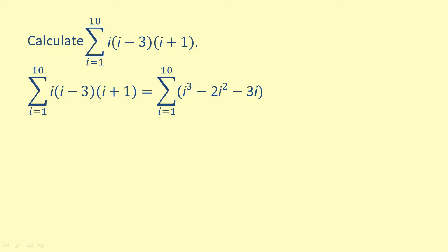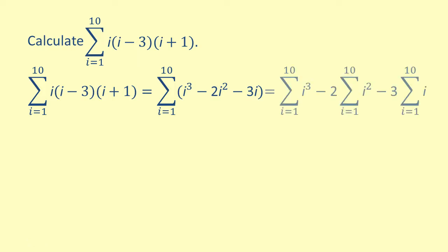We can now rewrite this using properties of sigma notation. So we get the sum of i cubed from i equals 1 to 10, minus 2 times the sum of i squared from i equals 1 to 10, minus 3 times the sum of i from i equals 1 to 10.